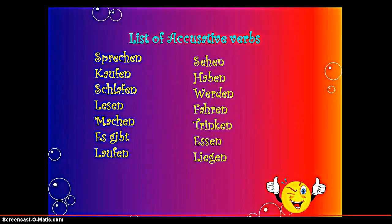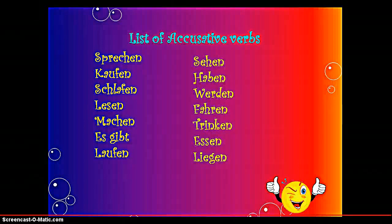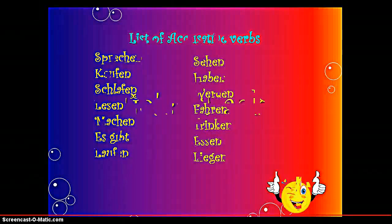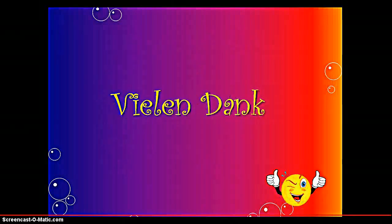Whenever these verbs are used, the sentence is considered an Accusative sentence. We have to pay attention while using these verbs. We have to use Accusative articles with direct objects whenever we are constructing a sentence. For example: 'Ich kaufe ein neues Auto.' 'Ich lese eine Zeitung.' 'Ich mache meine Hausaufgabe.' I am using Accusative verbs and direct objects with Accusative articles. Only the subject before the verb is Nominative — everything else remains Accusative. That's all for today. Vielen Dank. Tschüss.